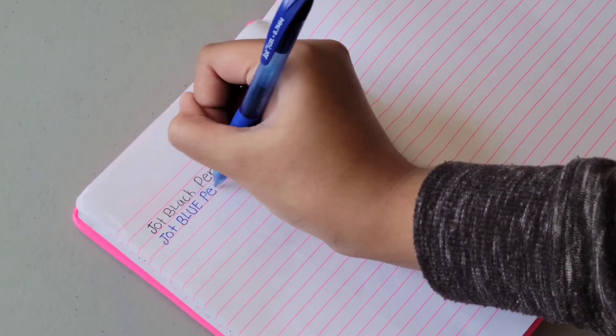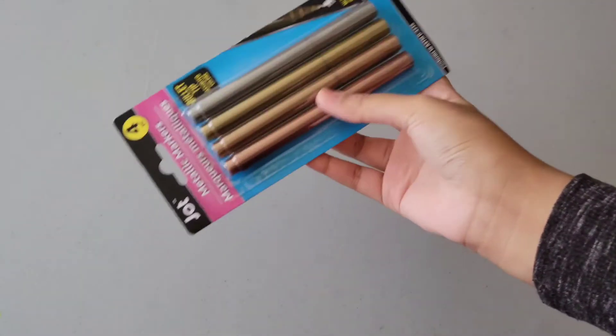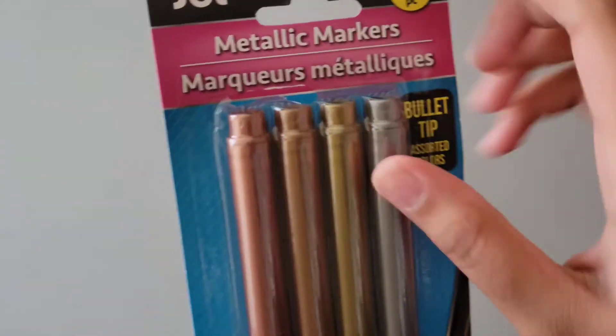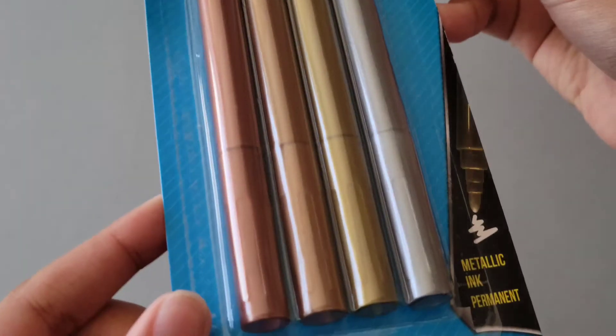As it said, here is the blue one, and it just writes really well. Now, up to the next item that we bought are some metallic markers. And these are my first time I'm actually going to be using metallic markers. So, I'm really excited.